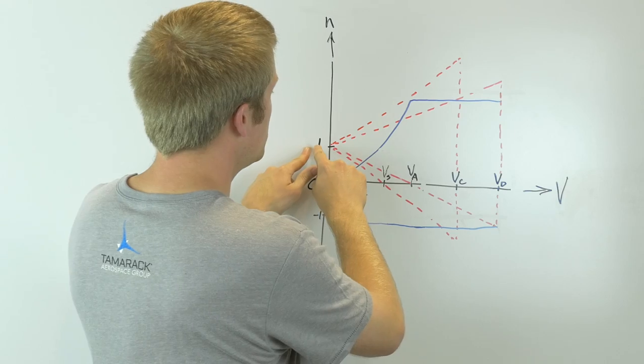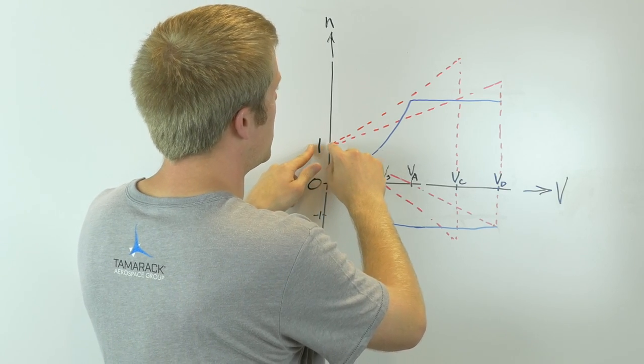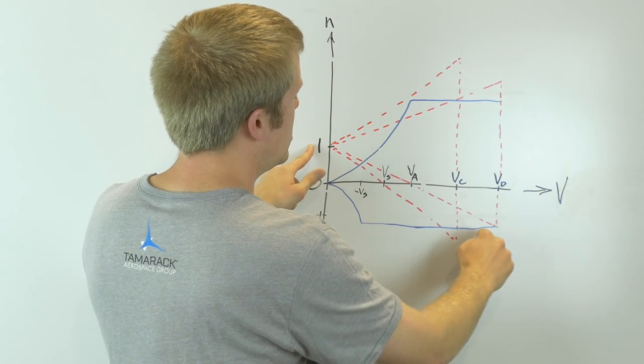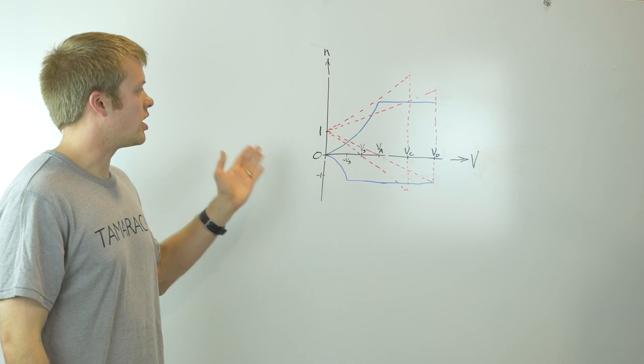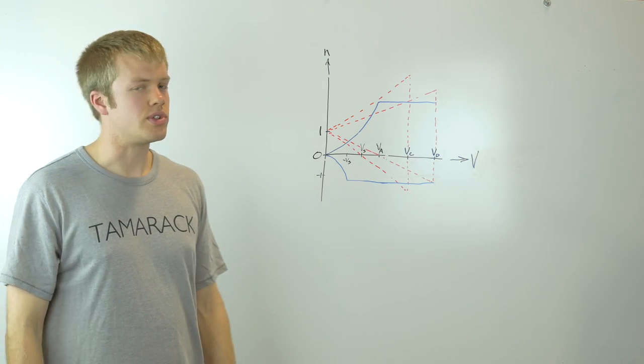Together, the two envelopes, if you draw a line all the way around the outside, you get the maximum envelope the airplane will see. And that is why VN diagrams are important to loads engineers.